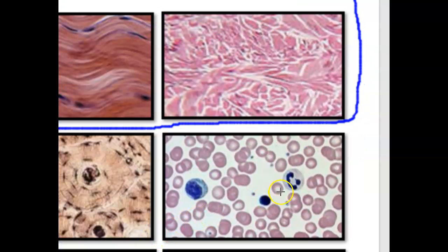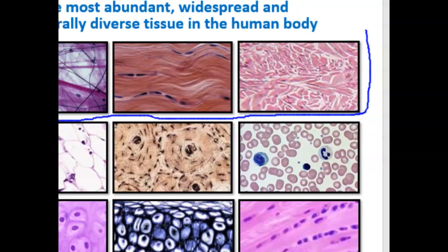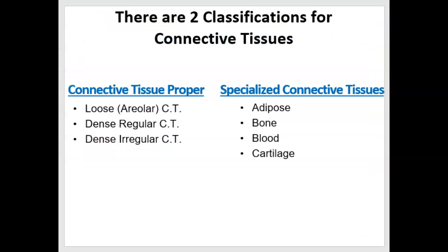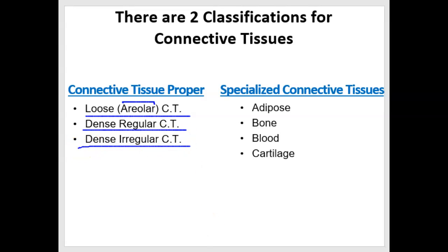We're going to look at those in order: proper connective tissues first, and then the specialized connective tissues. So the names of the proper connective tissues include loose connective tissue. Some people insist on calling it areolar, but that just describes where it's come from, coming from the nipple area. Its proper name is loose connective tissue. And then there's dense connective tissue of two types: regular and irregular.